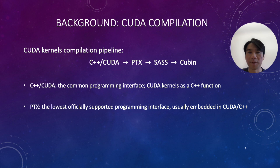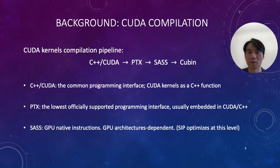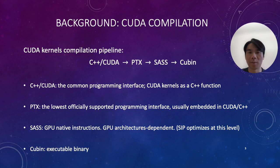Next, the PTX gets compiled to SASS, which is native to the GPU architecture. Note that each GPU generation has a different SASS instruction set. This is also where SIP performs optimization, because the GPU executes the static schedule of SASS. Finally, the SASS gets assembled to Cubin, which is an executable binary that directly runs on GPUs.